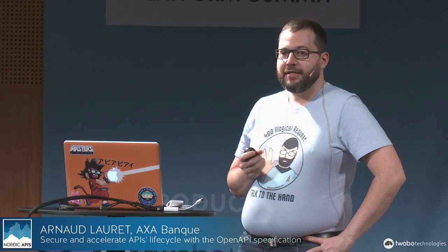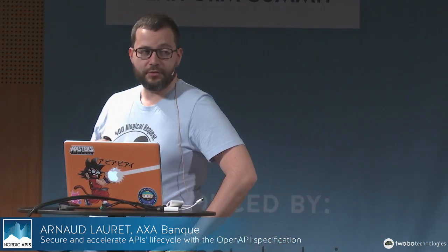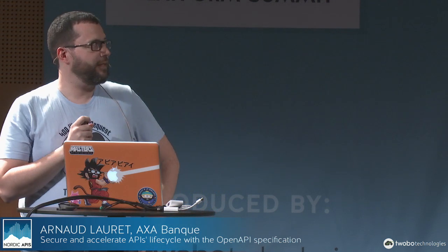API description, the final frontier. These are the voyages of a Starship Open API. Its mission: to describe strange APIs, to accelerate and secure their creations and their evolution, to boldly go where almost no one has gone before.